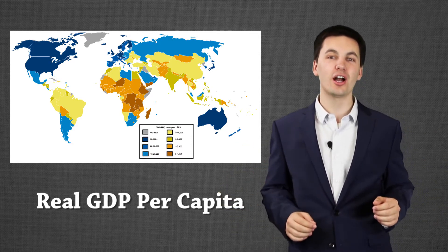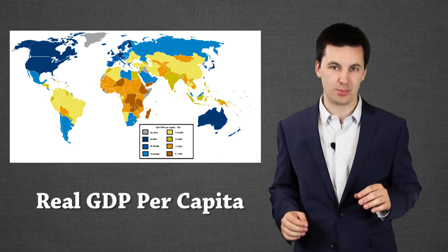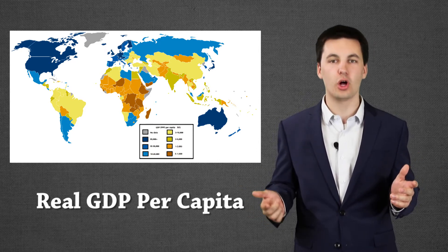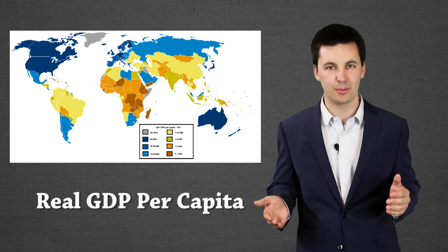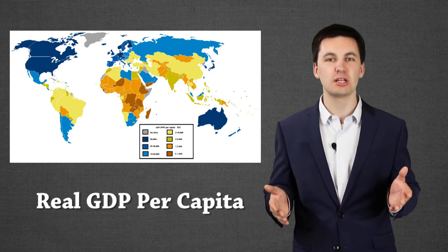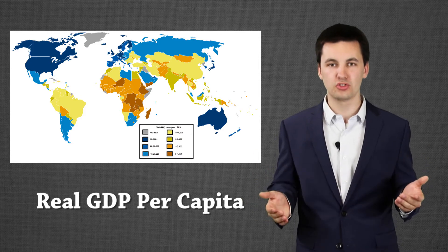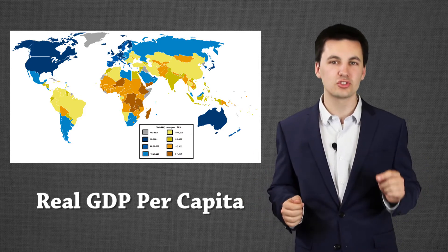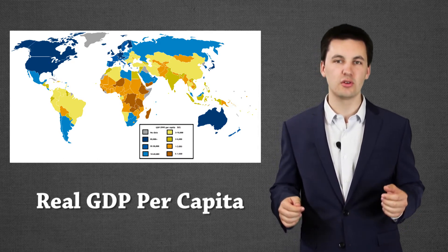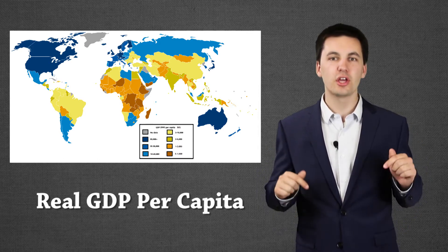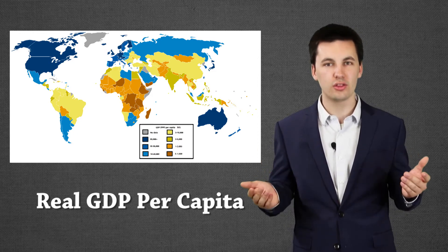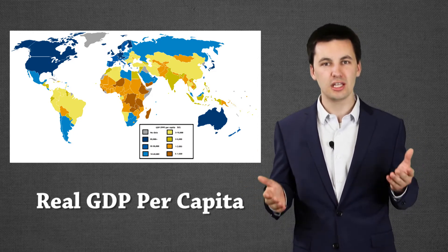This video is going to be talking about real GDP per capita. We're going to touch on productivity in this video, standard of living. We'll also get into real GDP and nominal GDP. But the main focus of this video is to make sure that you can understand, by the end of this video, what is real GDP per capita and why is it so important? While watching the video, make sure you use the guided notes. You can find them in the description below. They go right along with the video and will help you memorize and understand all the information that I'm talking about in the video.